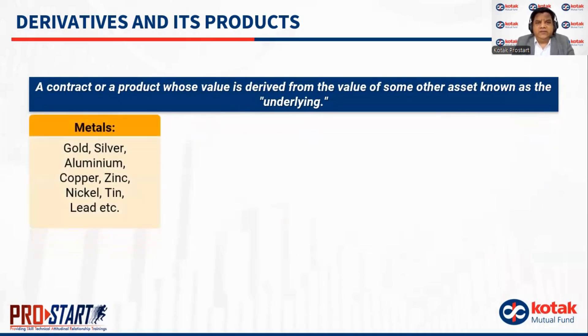Let us take the first underlying category, which is metals. It could be gold, silver, aluminium, copper, zinc, tin, nickel, lead, etc.